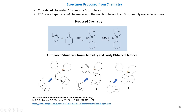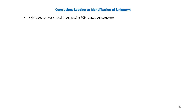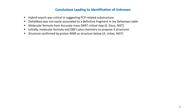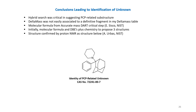Here are the conclusions that led to our identification of the unknown. The hybrid search was critical in suggesting PCP-related substructure. The delta mass was not easily associated with any definitive fragment in the delta mass table — a somewhat difficult problem. The molecular formula from accurate mass DART data was a critical piece of information. Using the molecular formula, double bond equivalents, and chemistry, we proposed three structures. The structure was confirmed by NMR to be the adamantane-type fused bicyclic ring that led to the observed spectrum of the unknown.